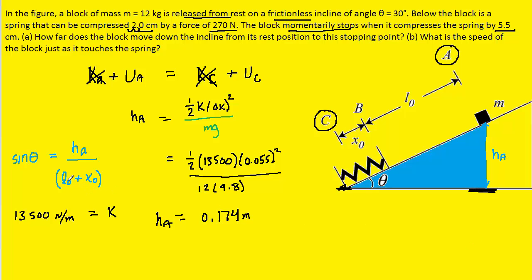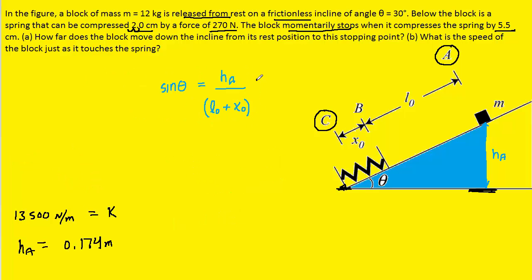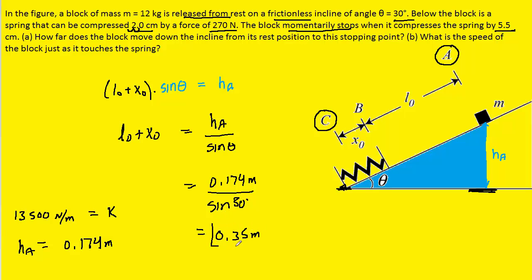Now, remember, we weren't looking for hₐ. We were looking for this distance, L₀ plus X₀. But we're going to be able to find that now because we have an equation that relates that to hₐ. So, let's take that equation. Let's multiply both sides of it by L₀ plus X₀. So, it cancels out on the right-hand side. And then, let's divide both sides by the sine of theta. So, we're going to see that the distance that we seek is that height divided by sine of theta. We can now go ahead and just plug in the height that we determined, which was the 0.174 meters. And we'll divide by sine of theta, which was given to us as 30 degrees. And when we work this out, we should get about 0.35 meters. And so, this is the correct answer to part A. That's that total distance from point A all the way over to point C.